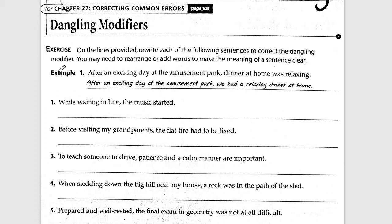Don't remove your content. Watch what they do in example one: 'After an exciting day at the amusement park, dinner at home was relaxing.' As it stands, this is saying that dinner had an exciting day at the amusement park. So we need to add in people who could realistically have had an exciting day there. The fix: 'After an exciting day at the amusement park, we had a relaxing dinner at home.' They add that content without taking anything away — just slightly modifying verb tense and adding people.